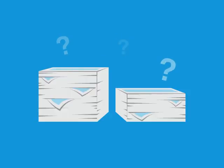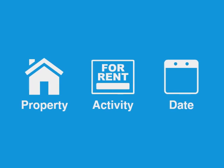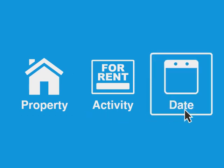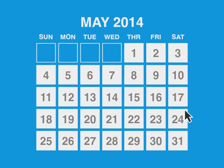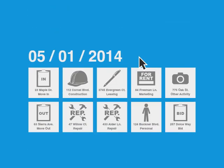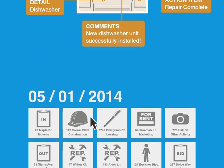Are you looking for that one photo in a thousand? Z-Inspector's powerful search and sorting capabilities allow you to search by property, activity, or date so that you can quickly and efficiently find the photos and inspections that you need.